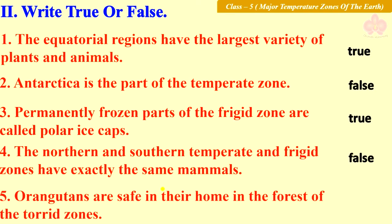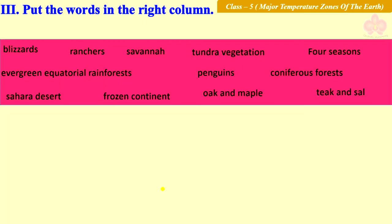Fifth statement: Orangutans are safe in their home in the forest of the torrid zones. The answer is false.